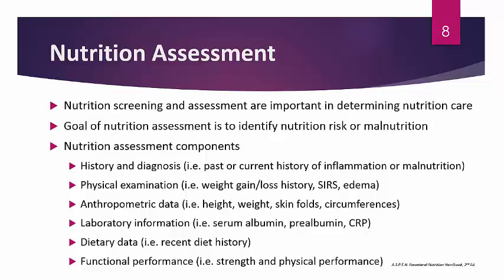Other assessment tools include anthropometric data such as height, weight, skin folds, or waist circumference. Laboratory information is also important — things such as serum albumin, prealbumin, and CRP may be obtained, though these markers are not very specific for nutritional risk. Prealbumin has a longer half-life and may be more reliable than albumin. CRP, or C-reactive protein, is another marker of inflammation — if levels are high, the patient may be in an inflammatory state. Dietary data, such as recent diet history, is also relevant.